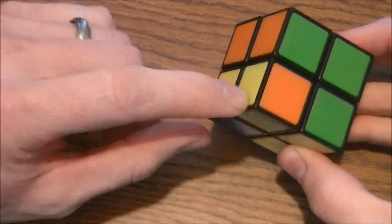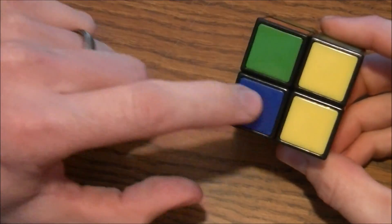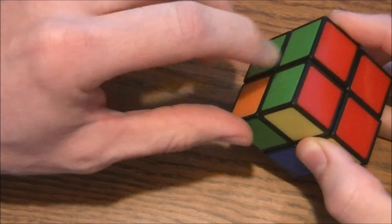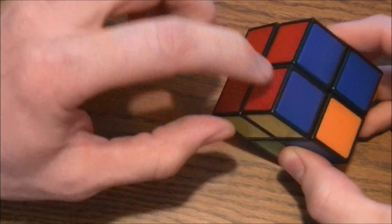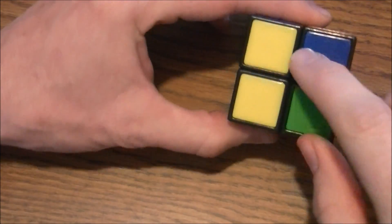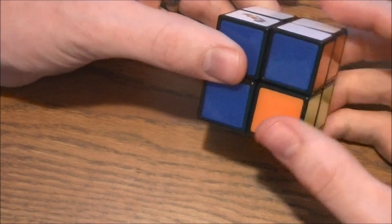Now I'm going to look and make sure that these bottom pieces are all in the correct location. This one here, green-orange, green-orange, red-green, blue-red, and blue-orange. So all four of these pieces are now in the correct location.